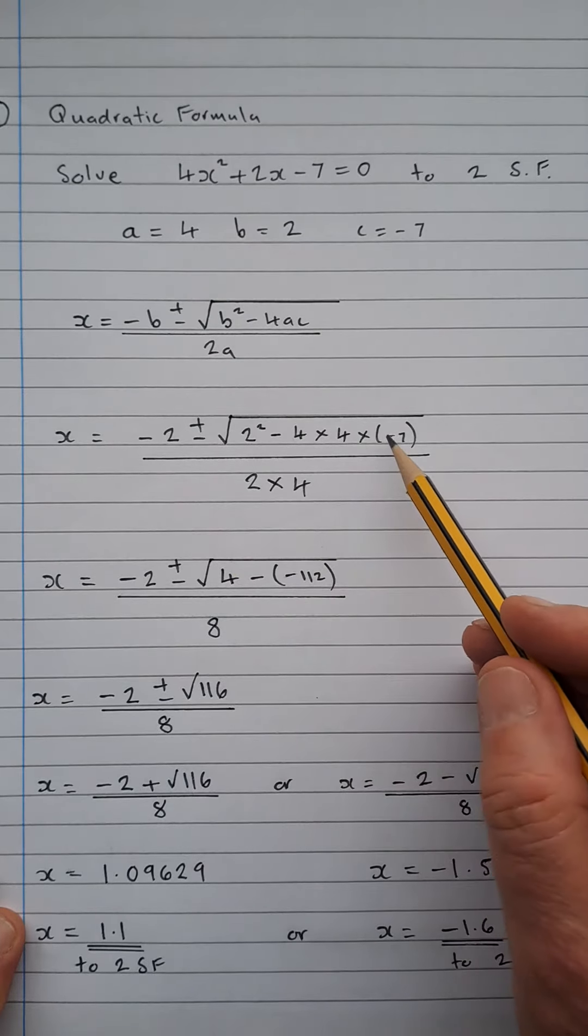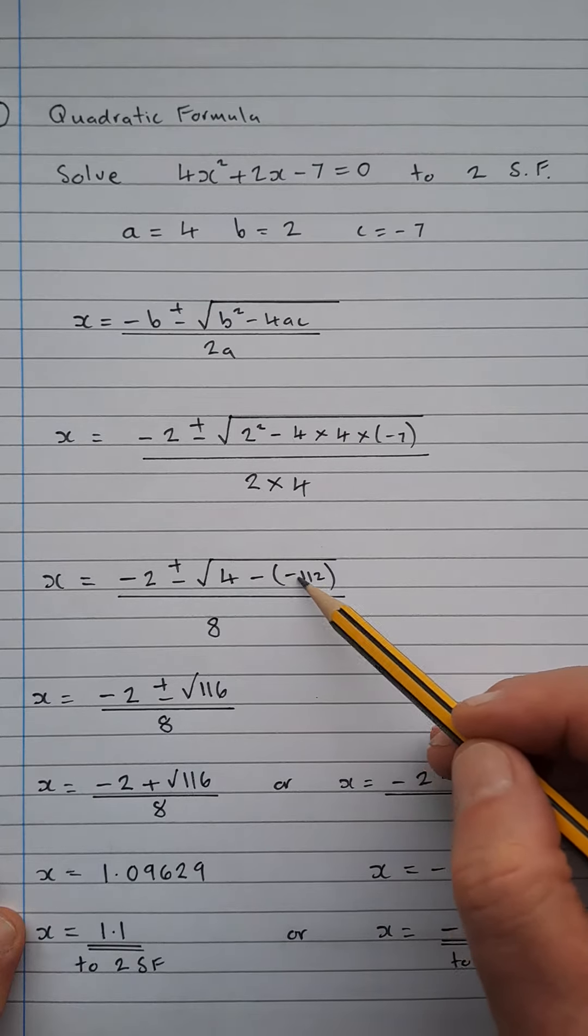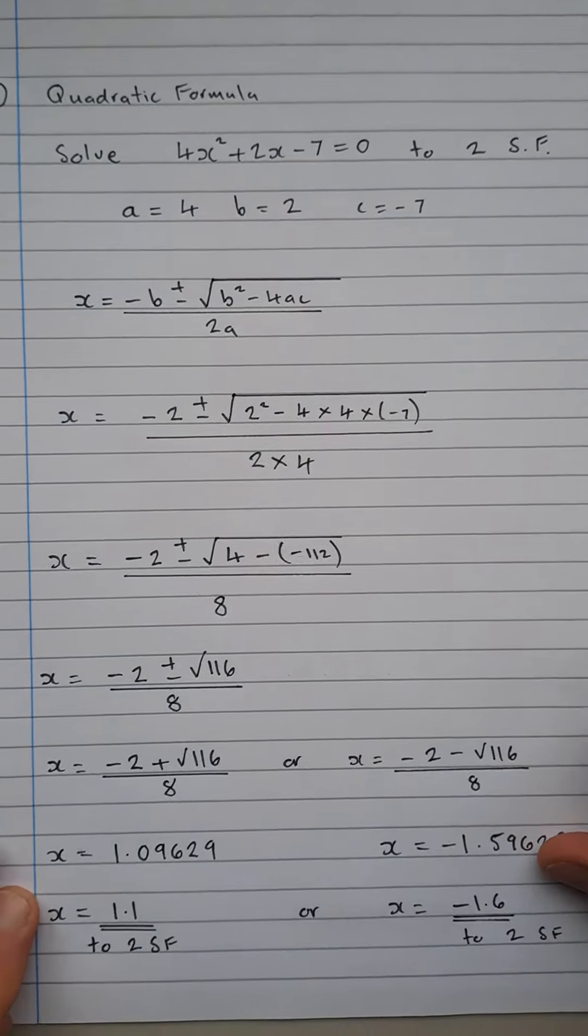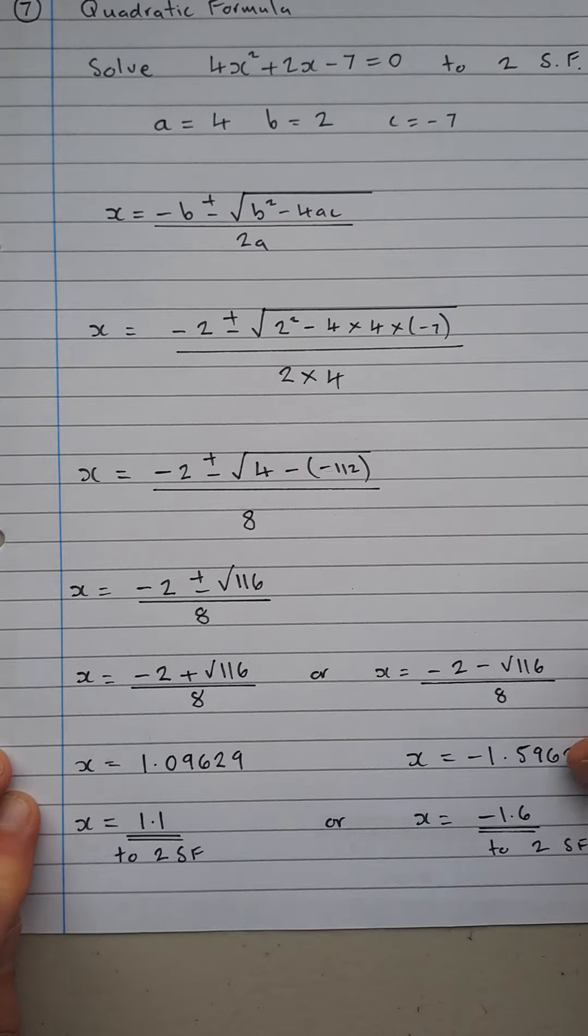then I've got 4 times 4 times minus 7, that's minus 112. Adding to the 4 gives you minus 2 plus or minus the square root of 116 over the two 4s which are 8.